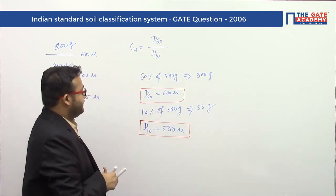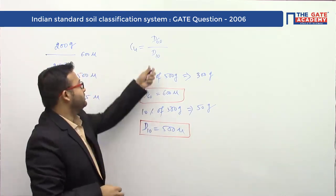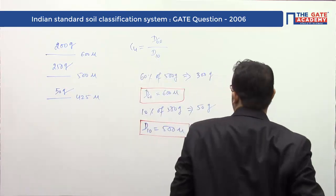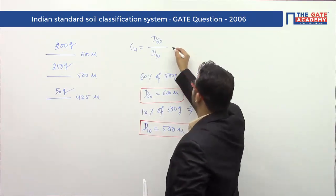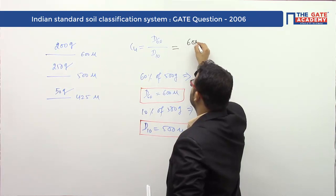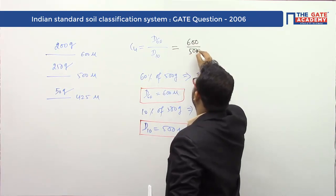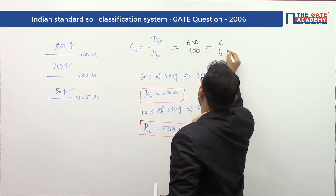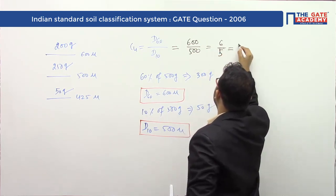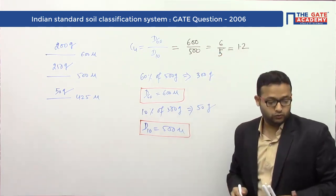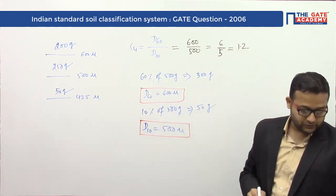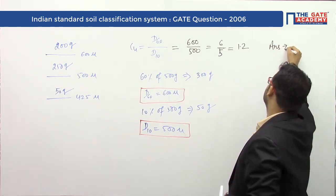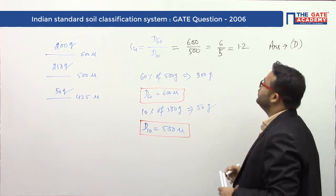Now, putting D60 and D10 into the formula: Cu = 600 / 500 = 6/5 = 1.2. Four options were given and the answer is option D, which is 1.2.